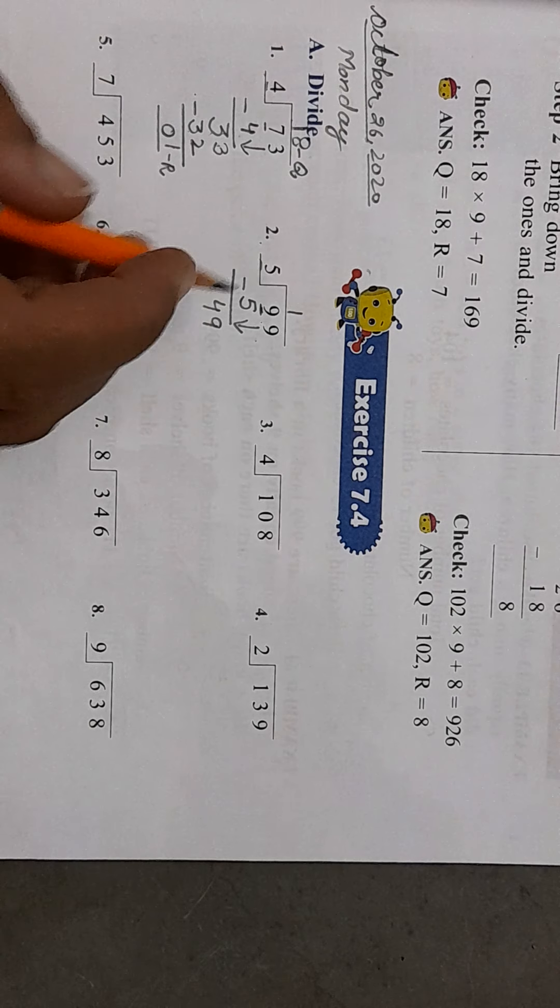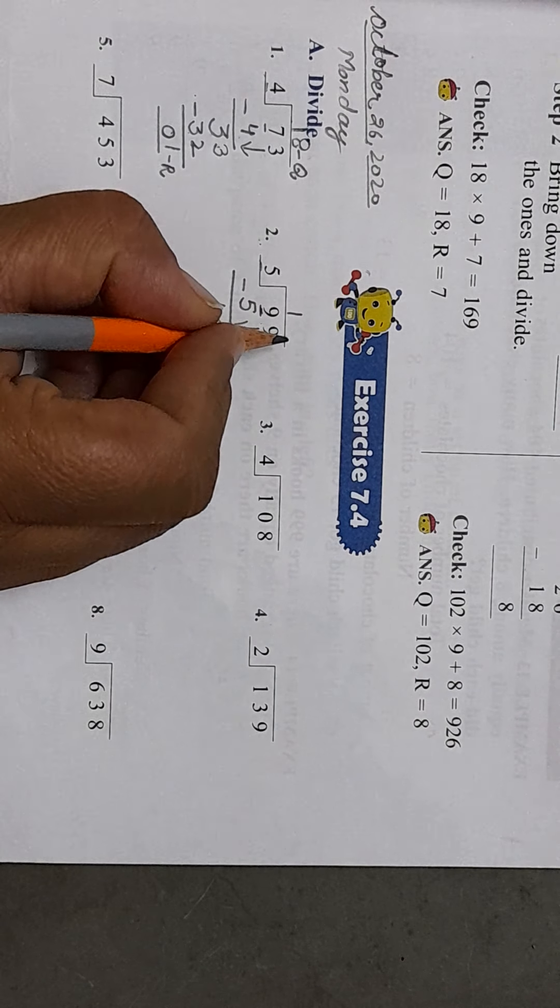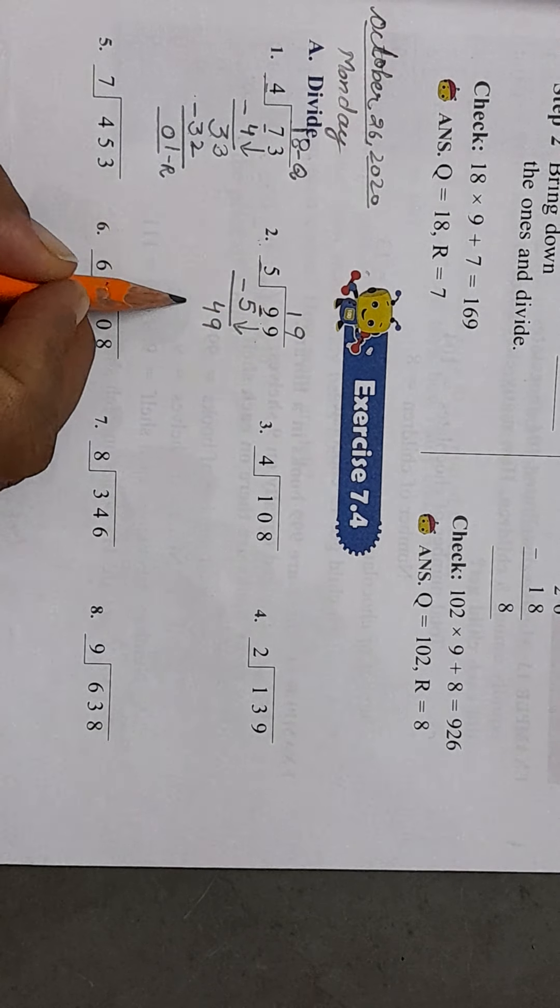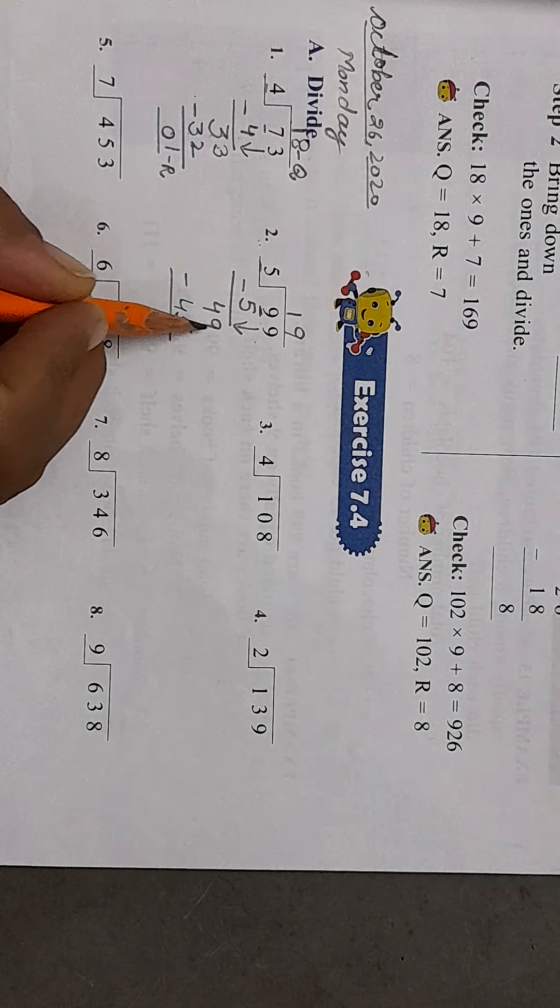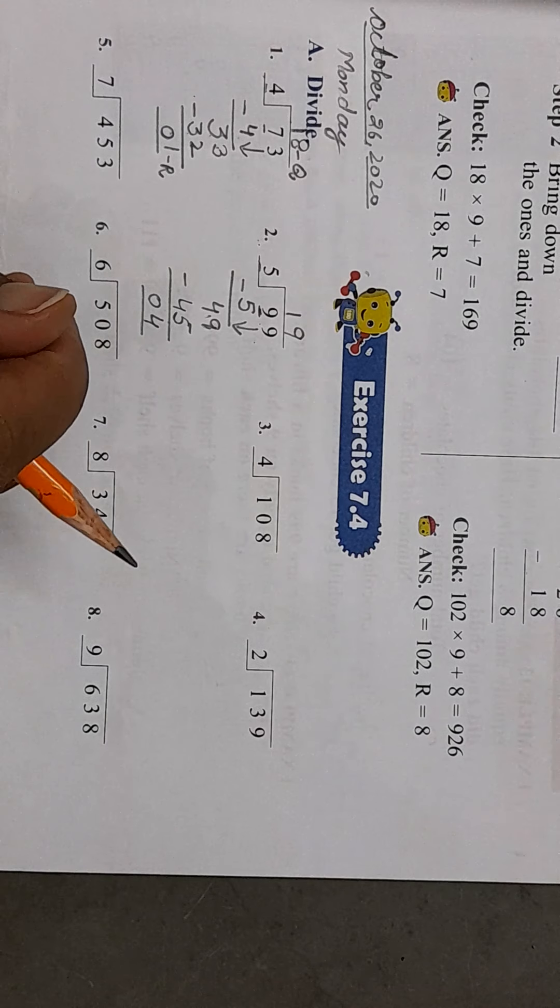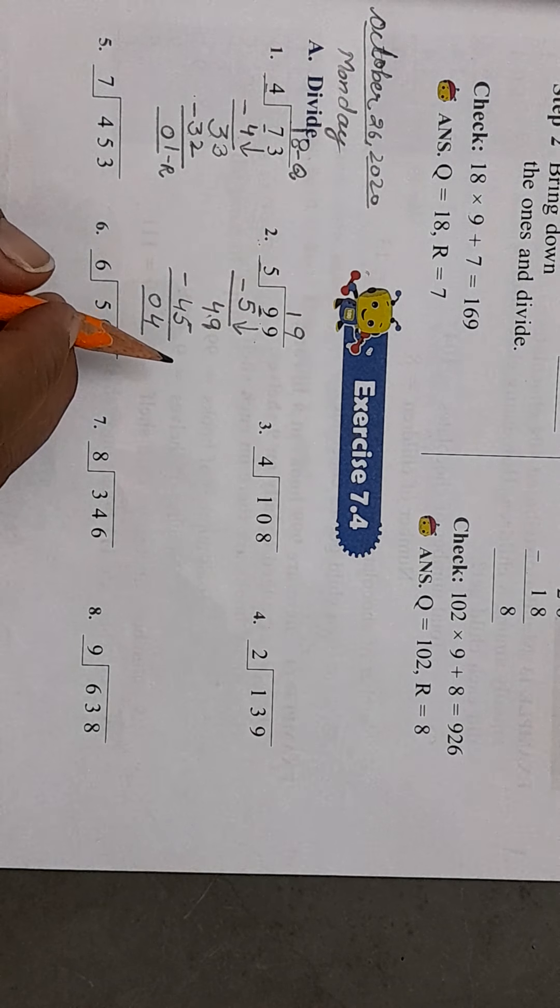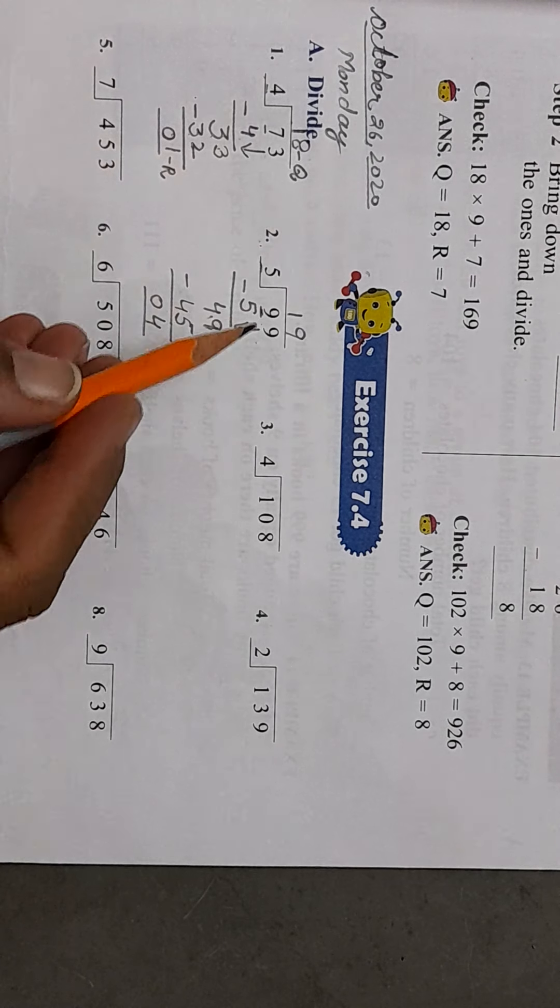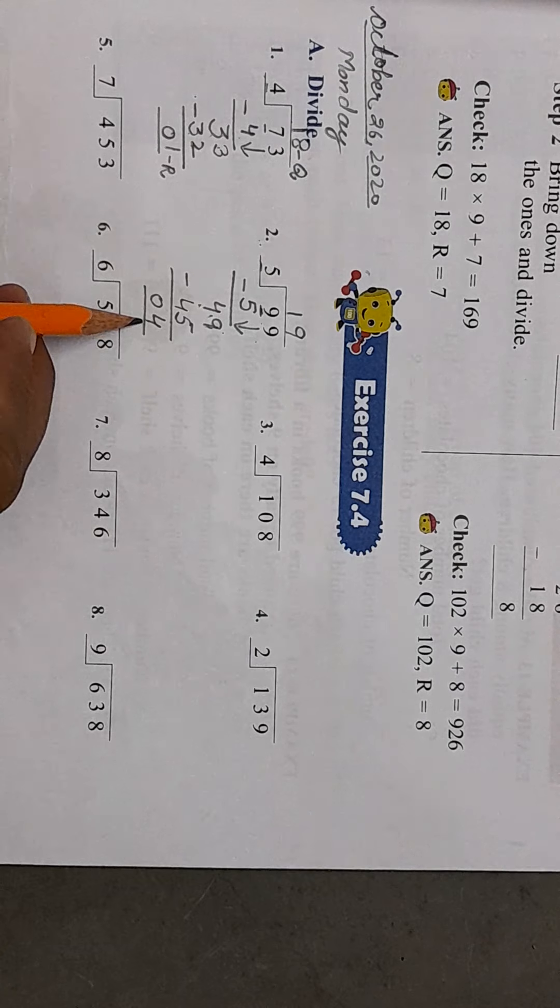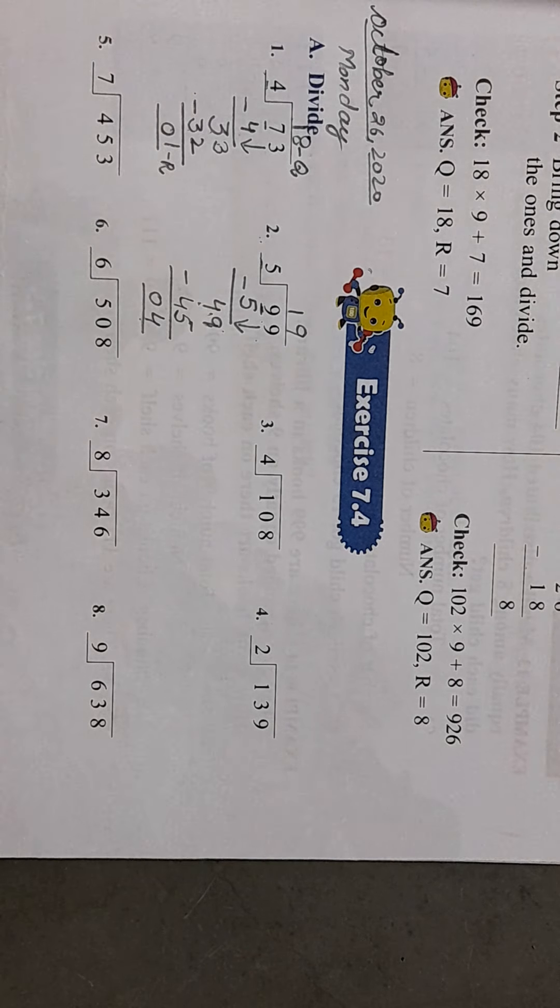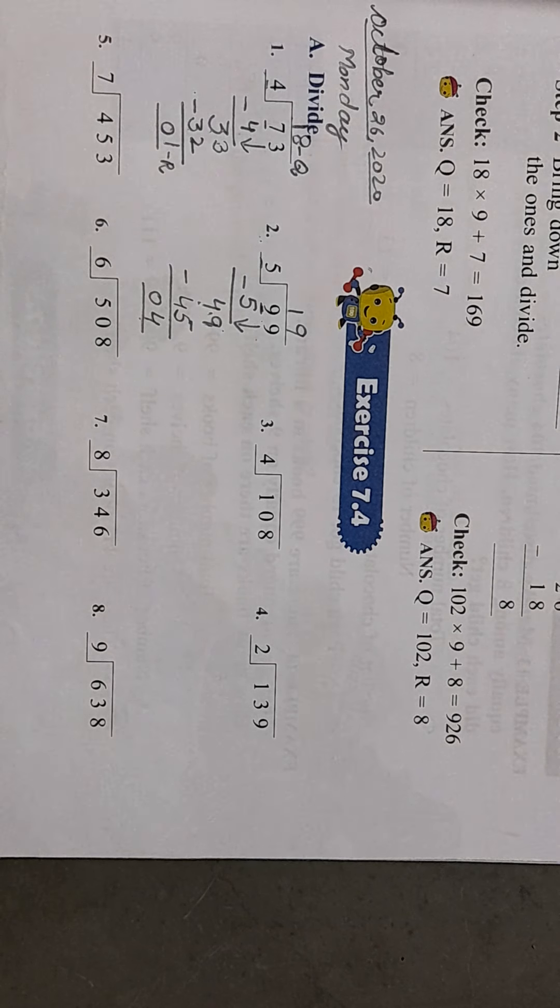We will bring down the 9. Does 49 come in the table of 5? No. So which number comes which is less than 49? It's 5 nines are 45. When we subtract it, 9 minus 5 is 4 and 4 minus 4 is 0. Always remember, the remainder that is left must always be less than the divisor, whether it's in the middle or at the end. If it's a greater number, it means your division sum is wrong somewhere.